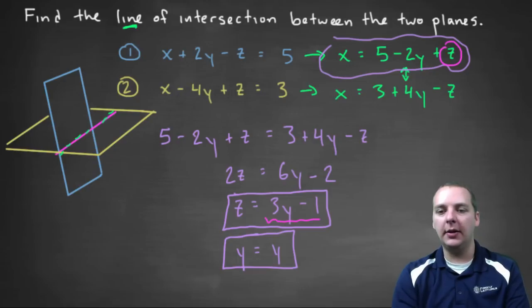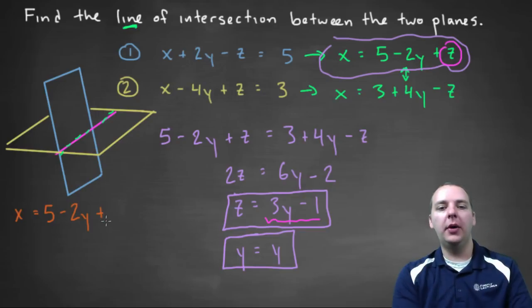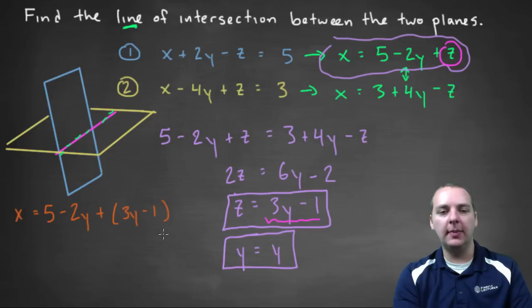So let's see here, I'm kind of running out of colors. Here I'll do it in orange, we'll try to squeeze this in. So x equals five minus two y, plus quote unquote z, but we're not going to write it as z, we're going to write it as three y minus one.